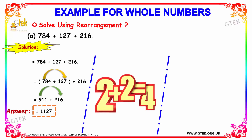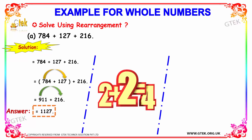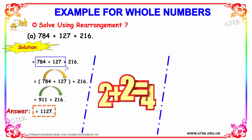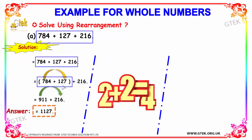The solution is: we have the equation 784 plus 127 plus 216. First, we add up the first two terms — that is 784 plus 127 — and we get 911. Then we add the third term, 216, along with 911, and we get the answer 1127.